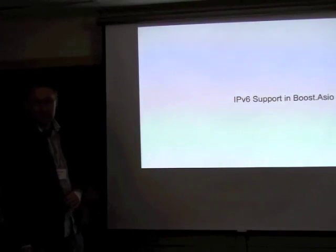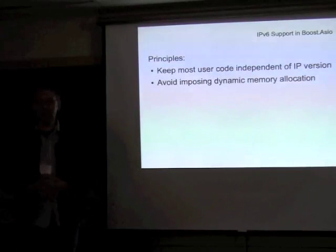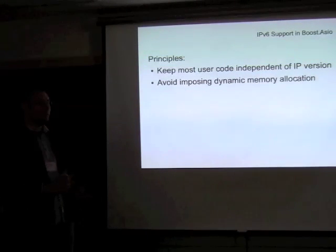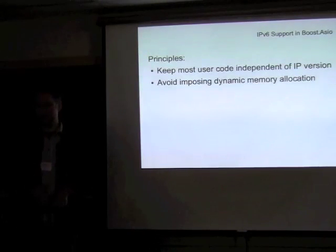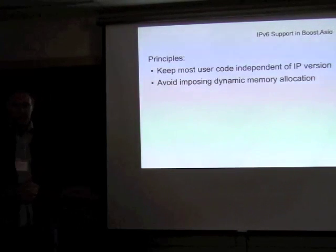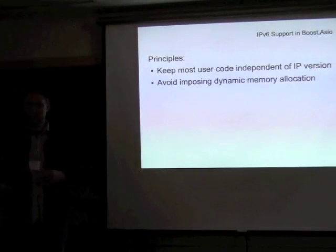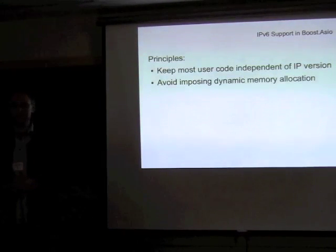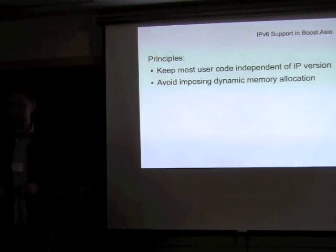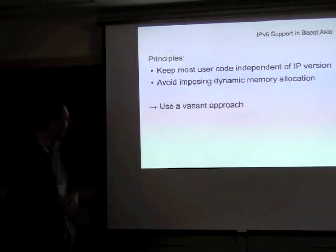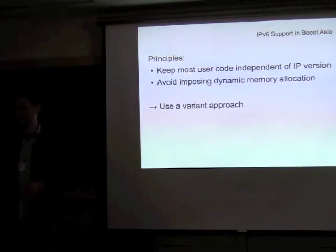In ASIO, a few classes together give you IPv6 support, with a couple of underlying design principles. First, most user code should not need to be aware of whether it's operating on IPv4 or IPv6. But because implementations must deal with either address type, I also didn't want to impose costs associated with new and delete. So I've taken a variant approach — it's a very simple variant: either an IPv4 address or an IPv6 address.